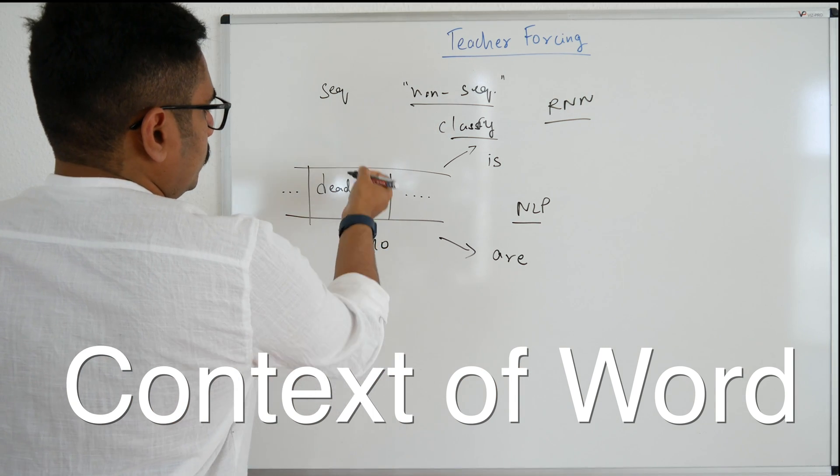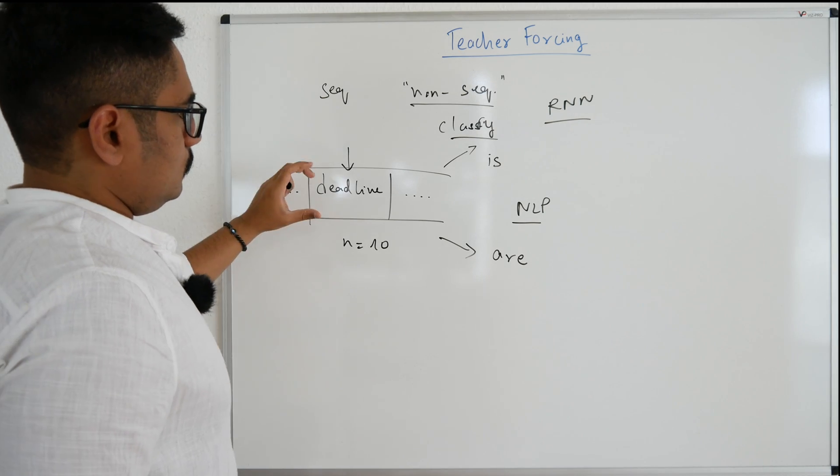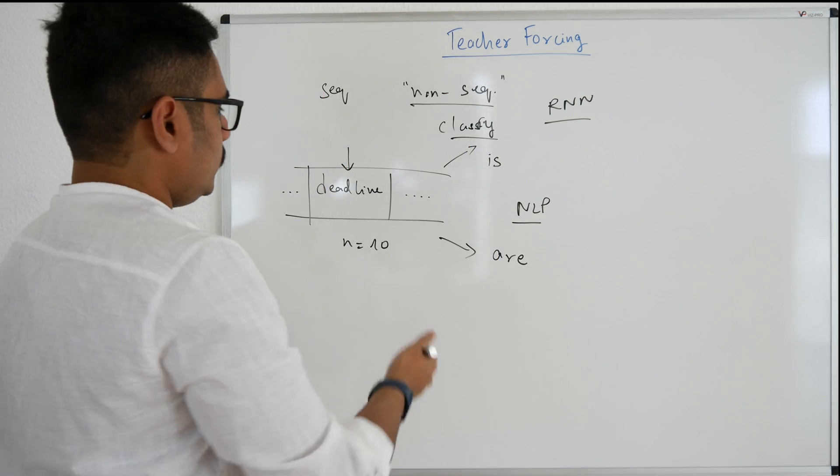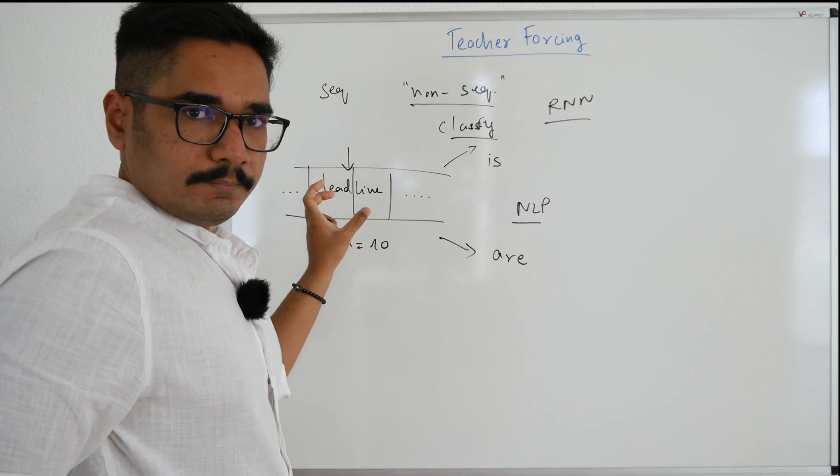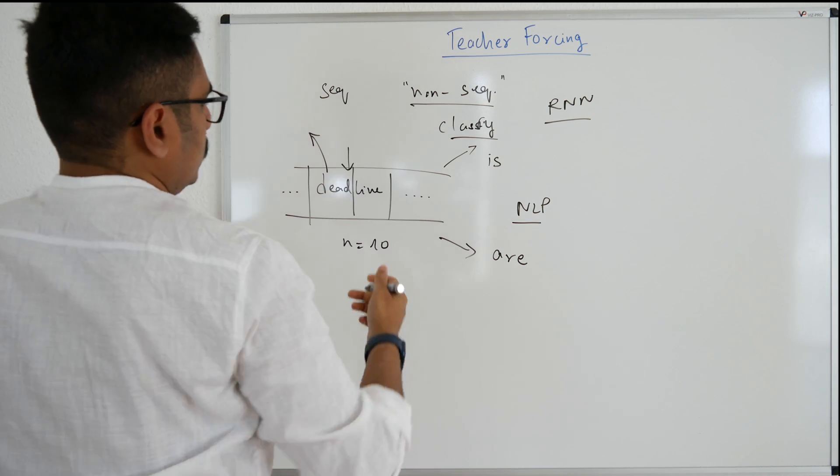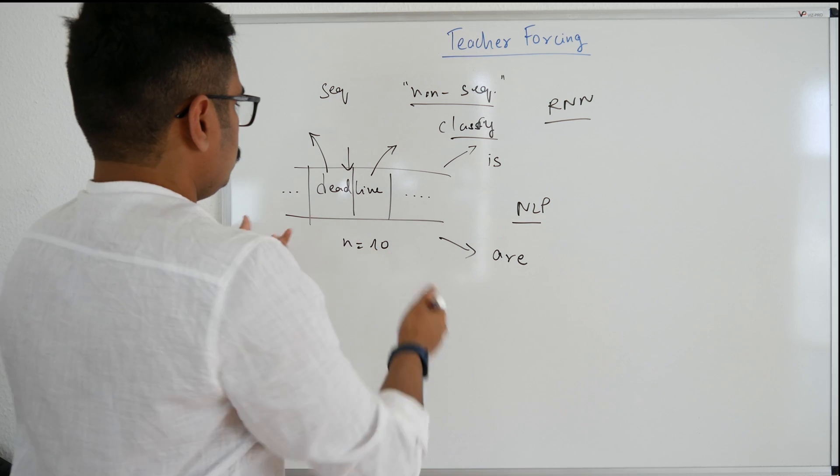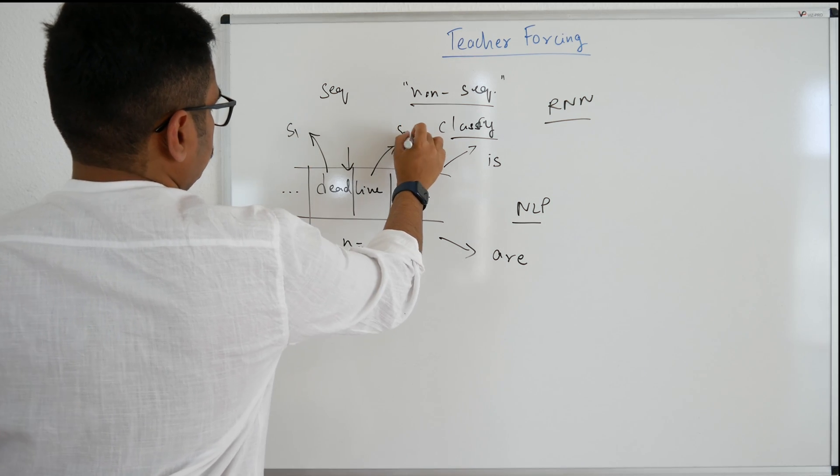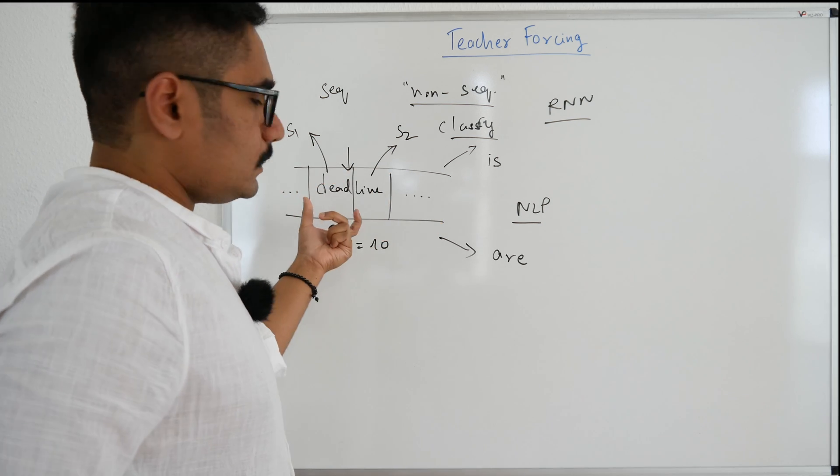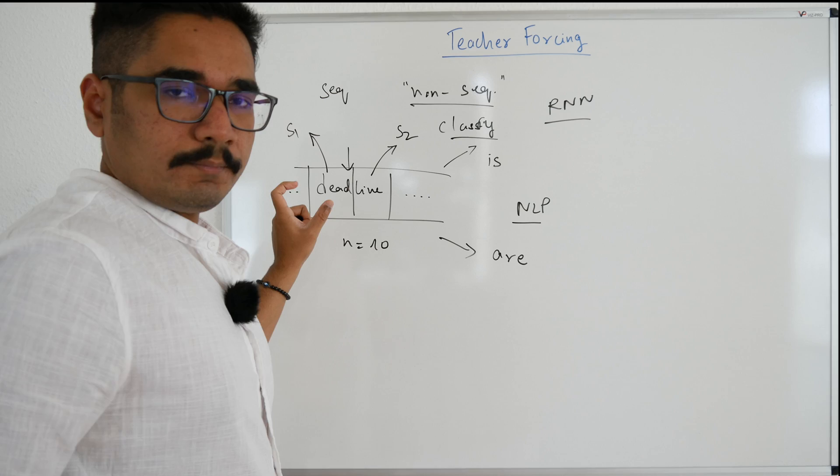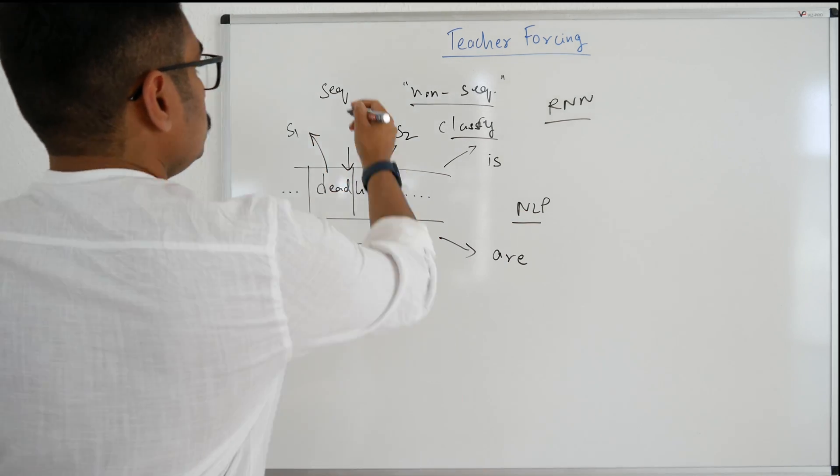If we don't consider this particular sequence the way we used to do with non-sequential data, what can happen is it can possibly break this particular word into two different words. Now you know 'deadline' has a different meaning than 'dead' and 'line'. If we consider this as two separate meanings, in your prediction if you don't consider this as one single particular word, then your prediction will go wrong. So for those cases you have to do sequential modeling.